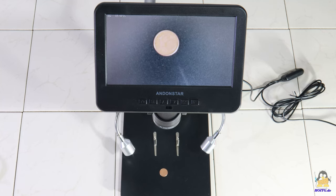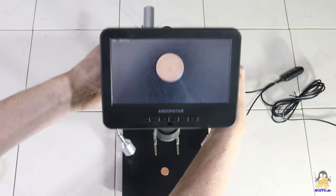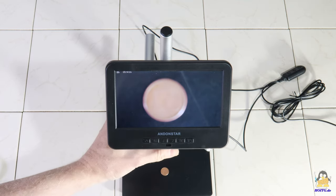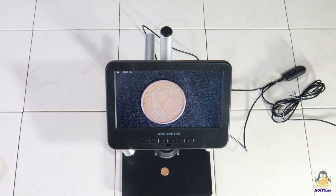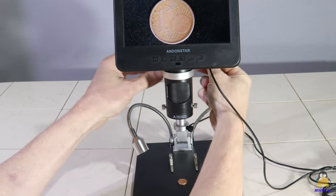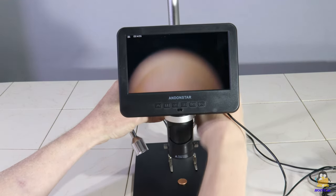The lens fitted first allows focusing at distances from 12mm up to 320mm. The closer the lens is to the object to be observed, the higher the resulting magnification.